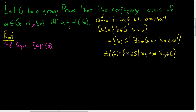And the claim is that A is in the center of the group. So to show A is in the center, we have to show that A commutes with all g in G. So take any little g in capital G. And the claim is that A g is equal to g A. We have to show that A g is equal to g A. In other words, multiplying by g inverse on the right, we have to show that A is equal to g A g inverse.